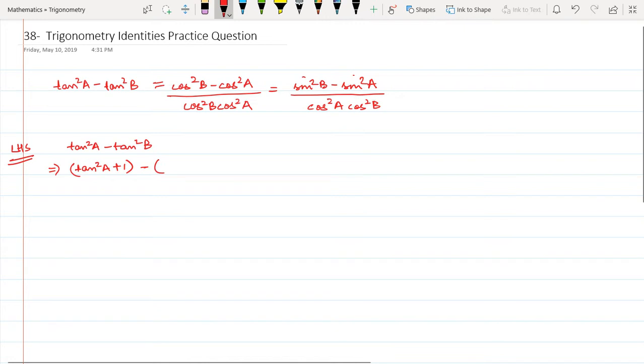There is a minus sign, so the one I add here will get cancelled. I have not made any change to the integrity of the question. Now I know 1 + tan²A is going to be equal to sec²A, and this is going to be sec²B.